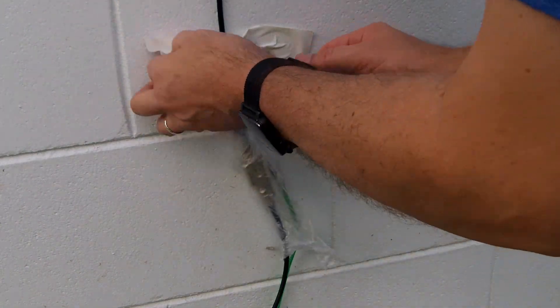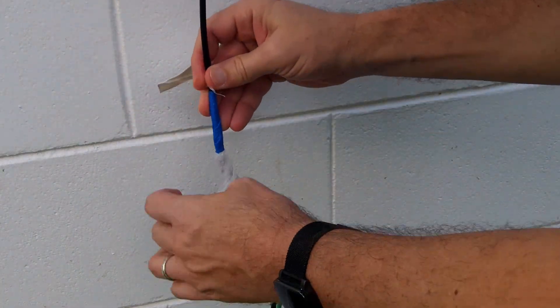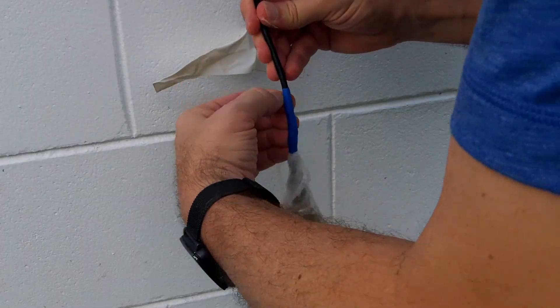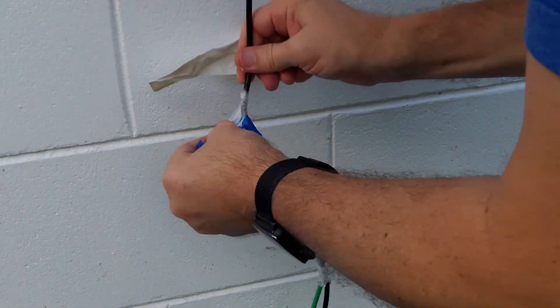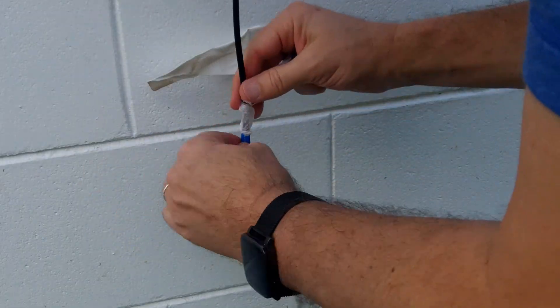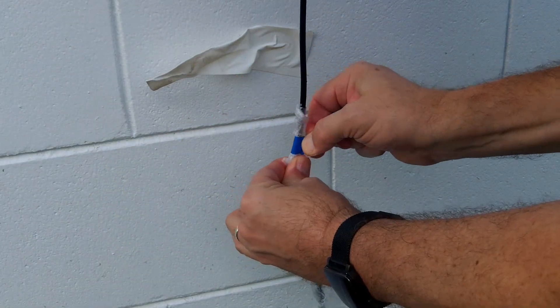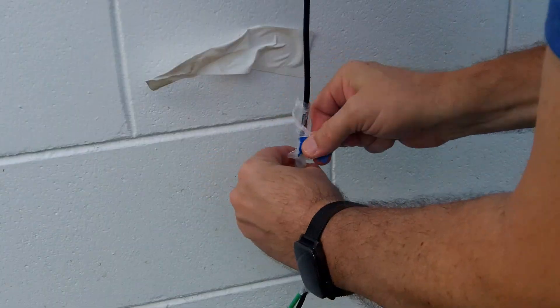Water is horrible for coaxial connections because if it gets inside, the connectors will corrode, and the corrosion will block the flow of electricity and radio waves, and your signal will get poor.